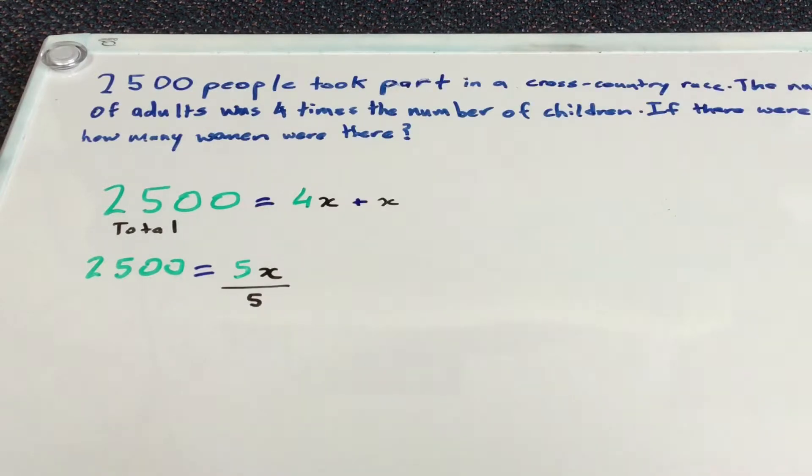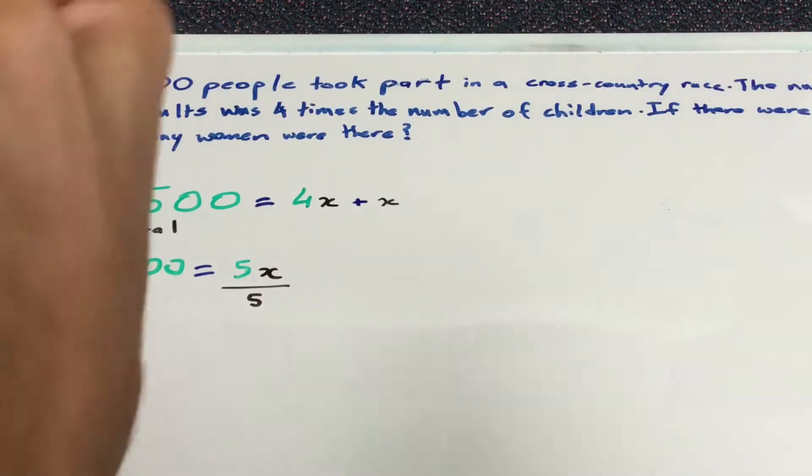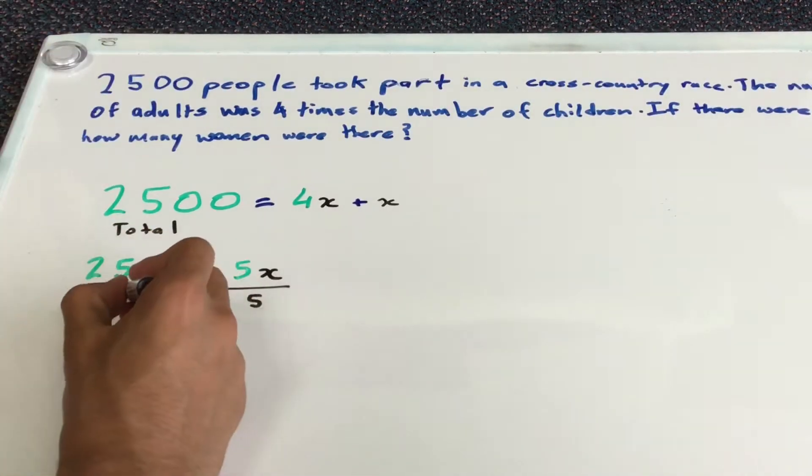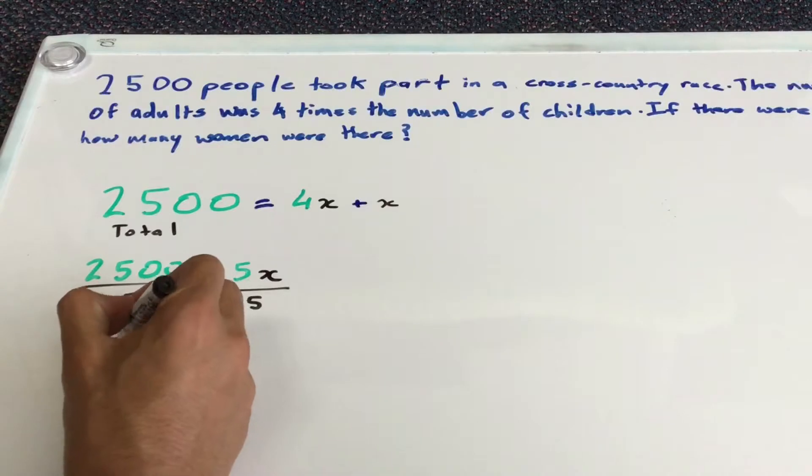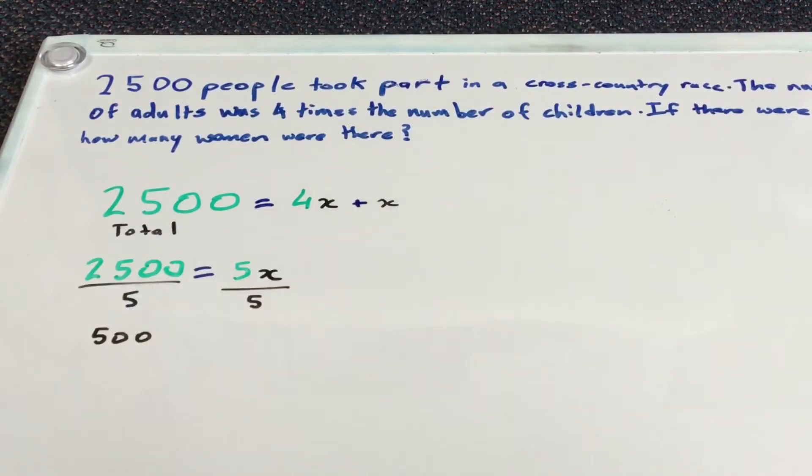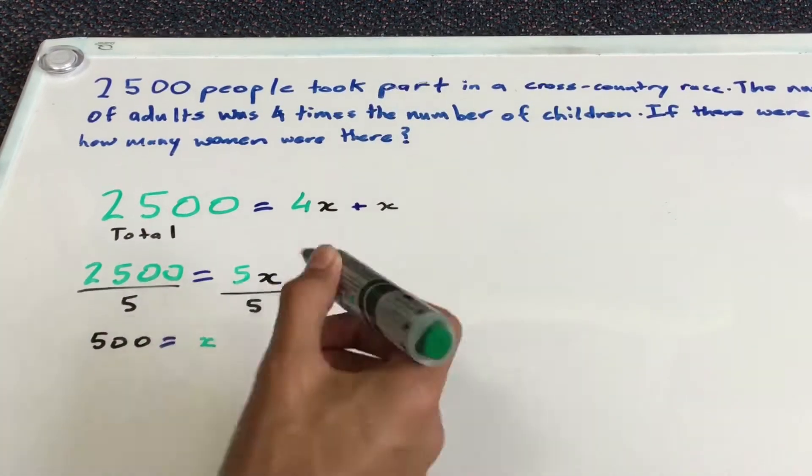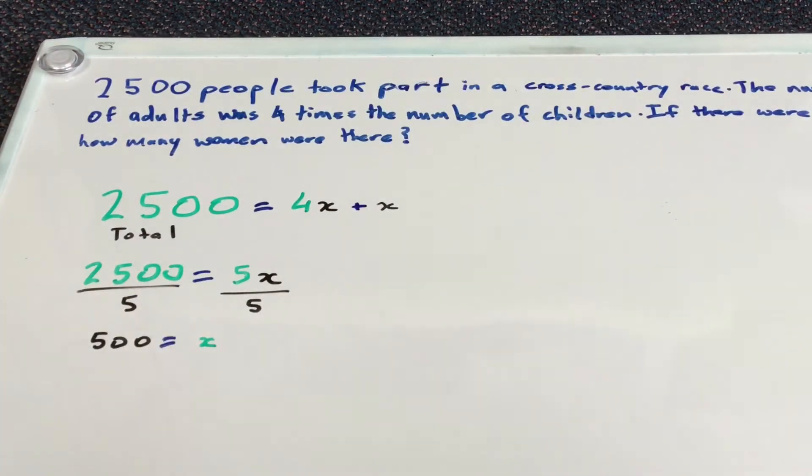And so what you do to one side, you have to do to the other side. So we're going to divide by 5 on the left-hand side as well. And you should be left with 500, which is equal to x. That's what you should have gotten as your result.